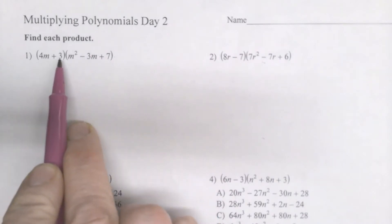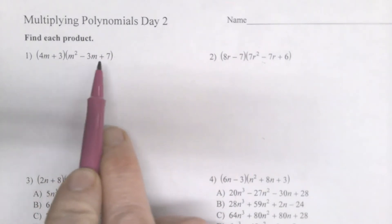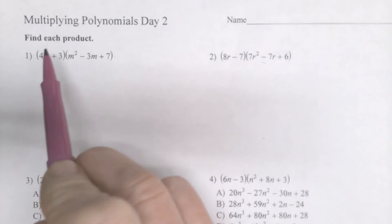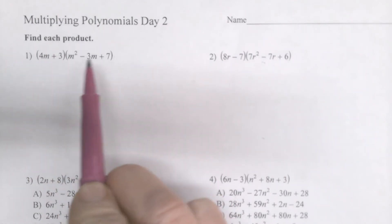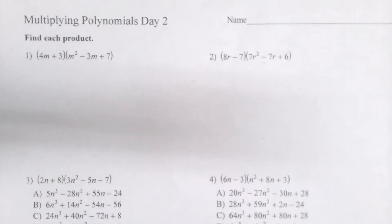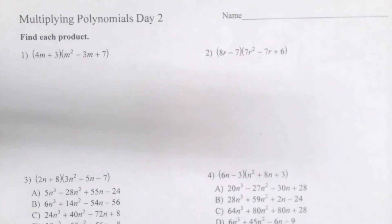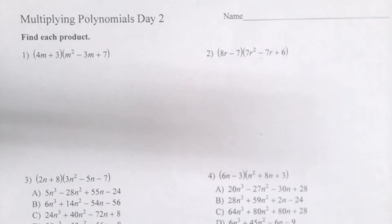And so the FOIL doesn't work. I've got more terms than set up for that. So there are a couple different options to multiply these.